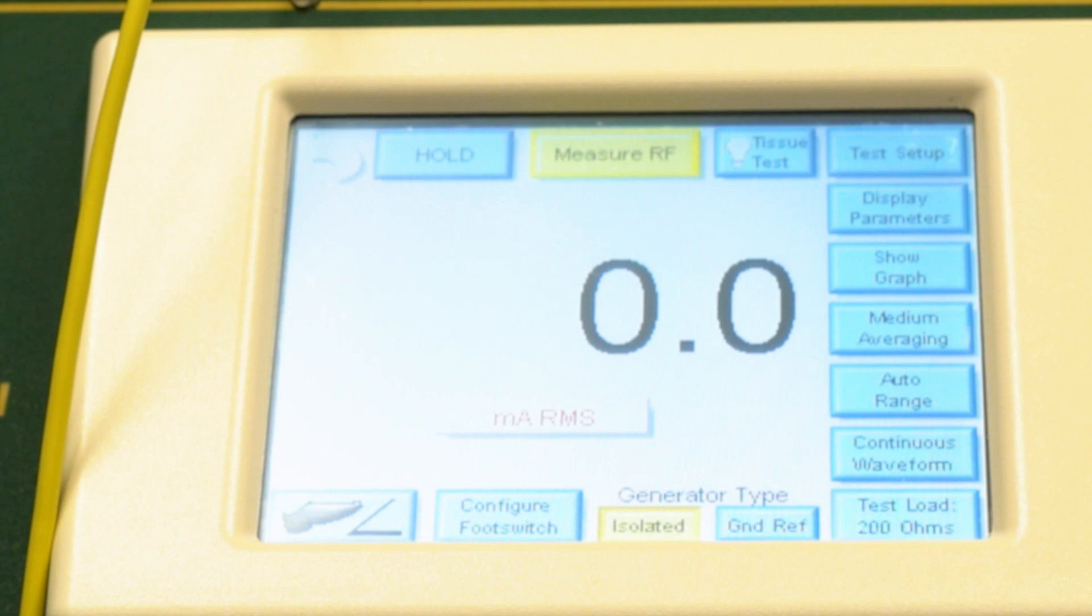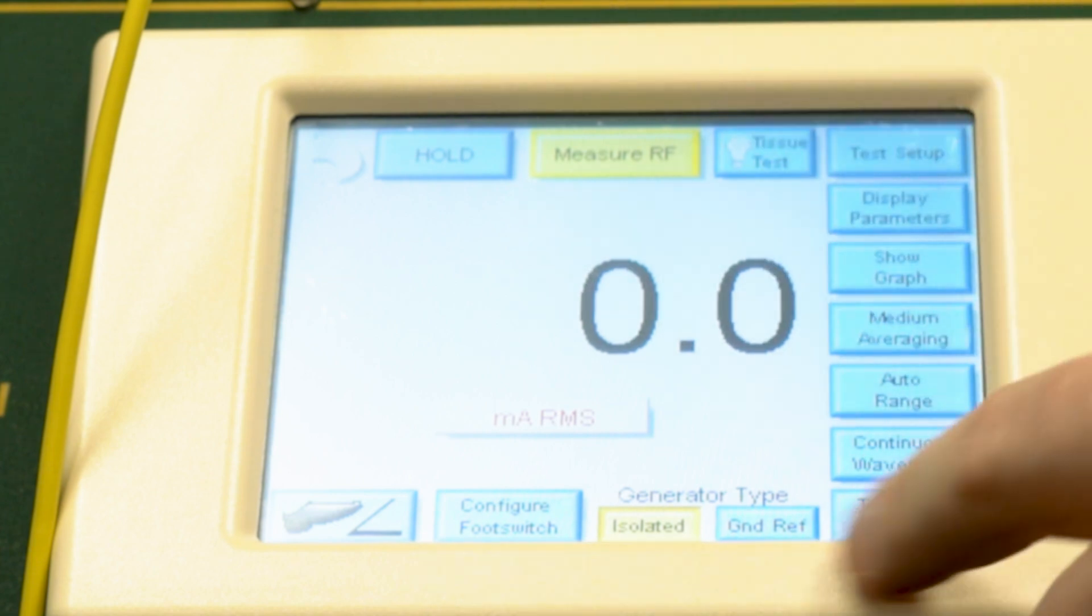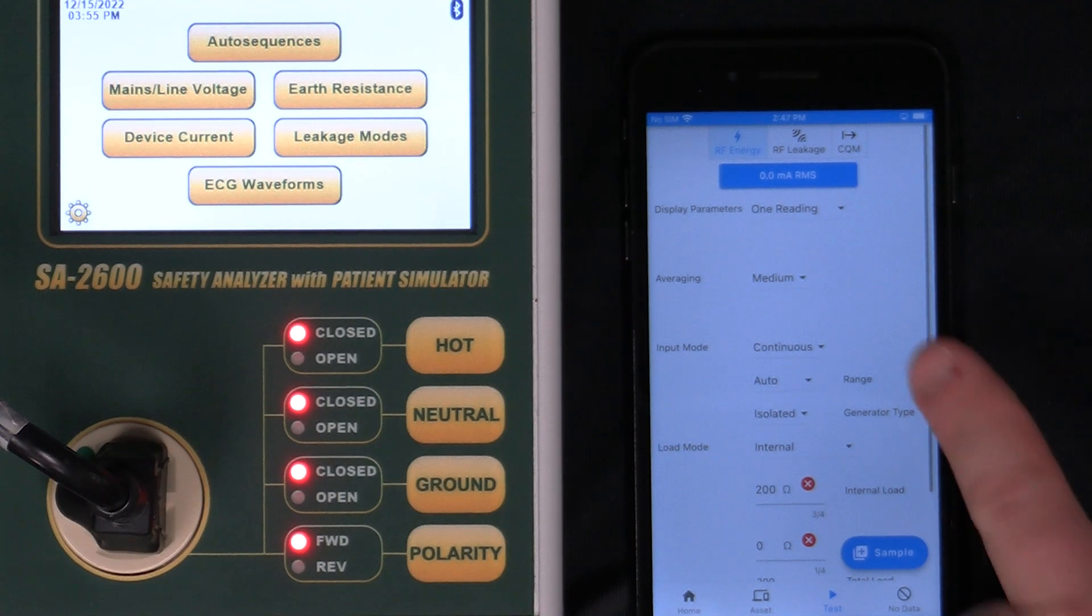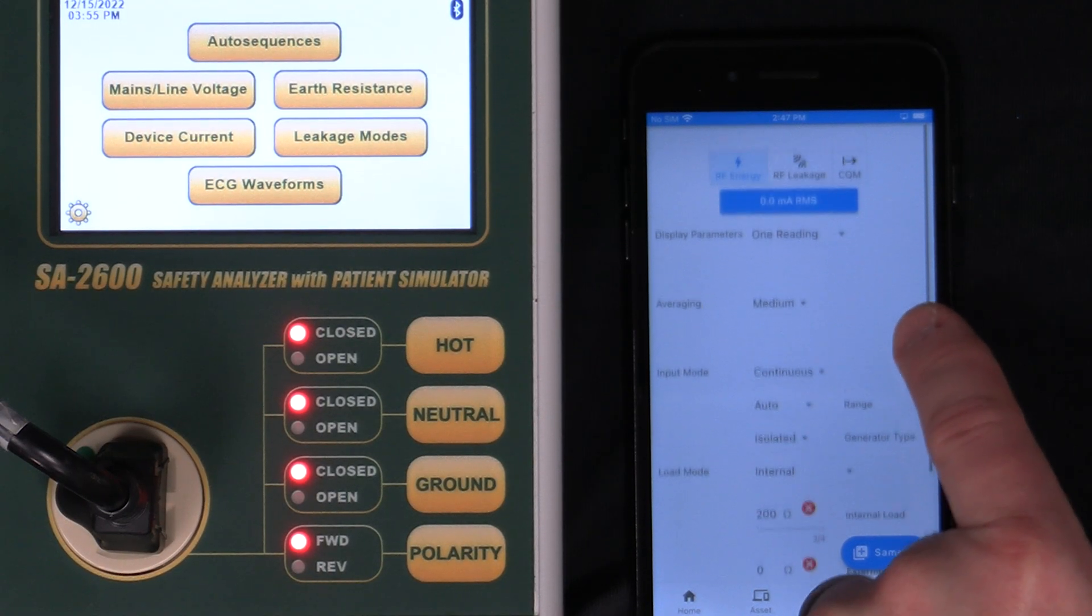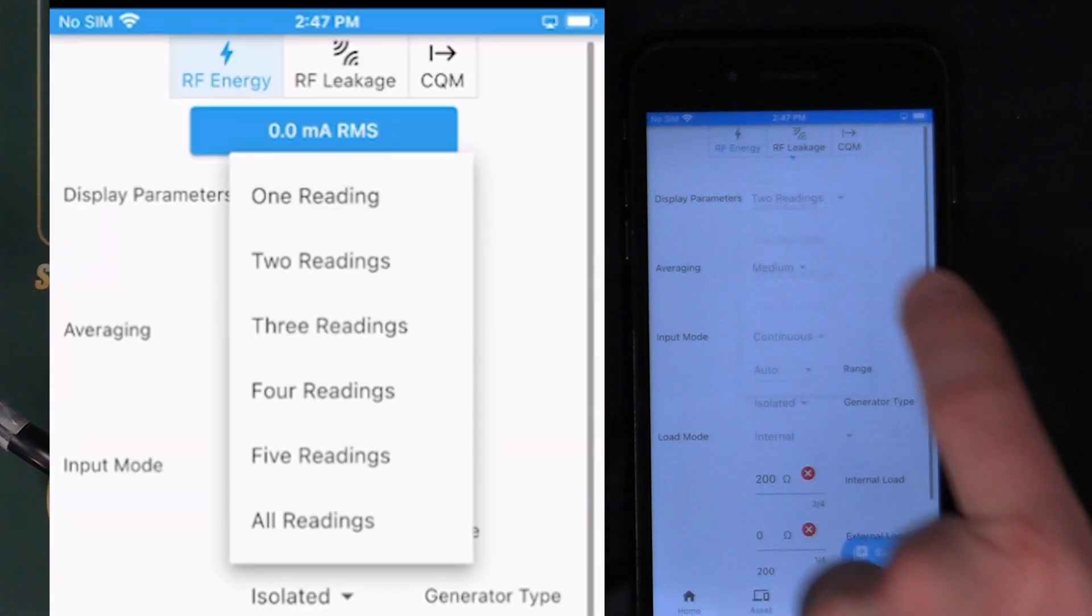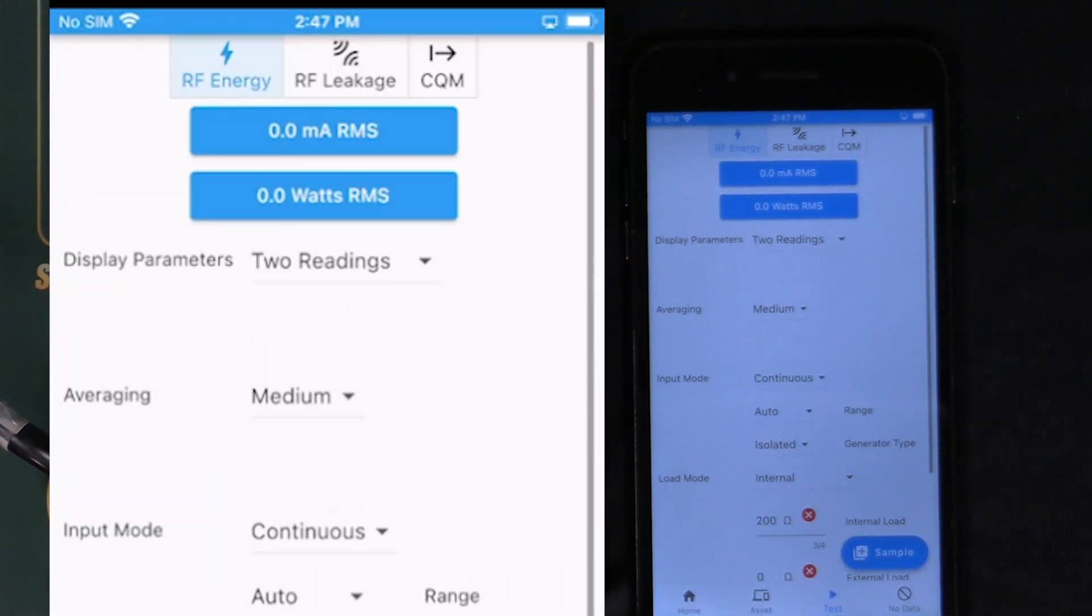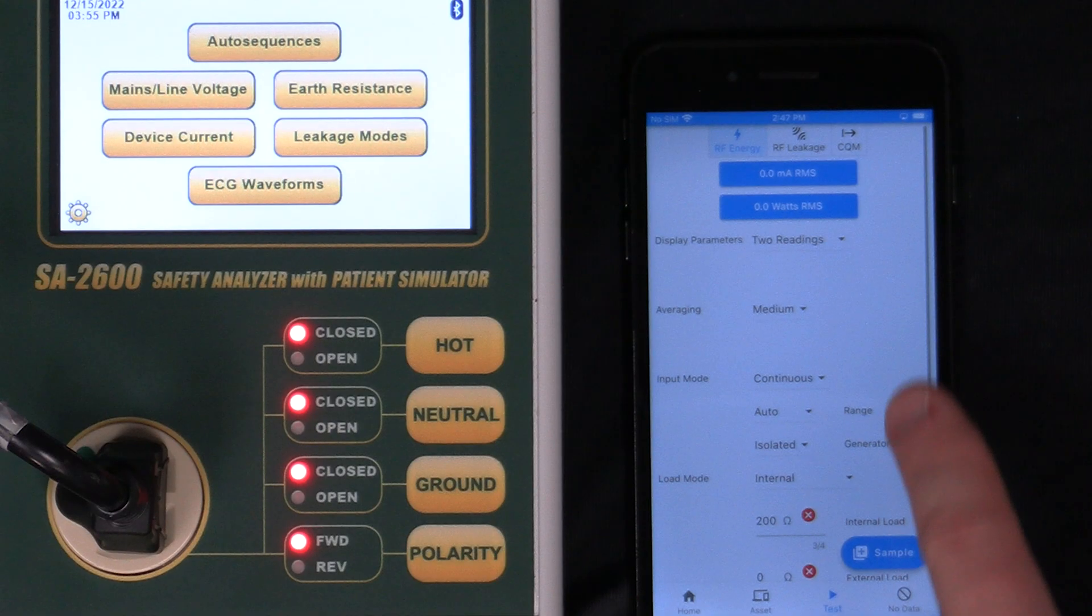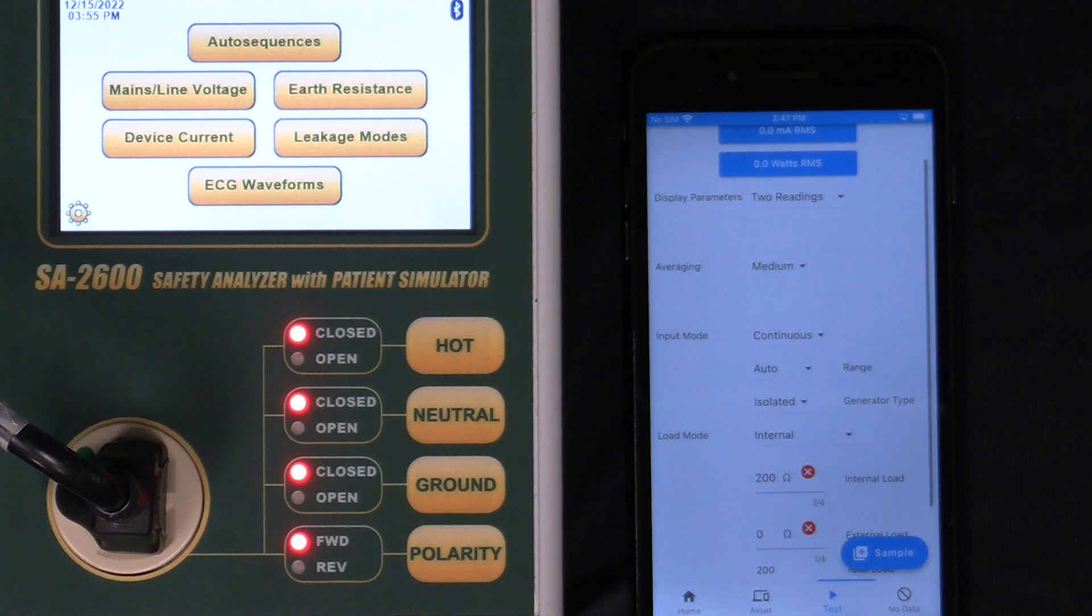We've got a lot of functions on the screen of the ESU 2400. All of these functions can be configured using MyBC Mobile. We see on the screen here we've got one reading. We could select either two readings or more and the screen of the ESU 2400 will adjust to match what we have selected on MyBC Mobile.